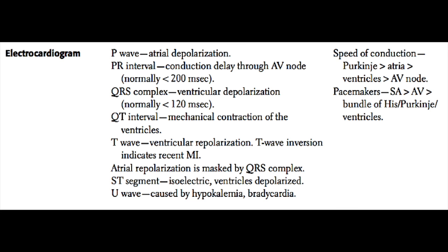A normal PR interval should be between 120 and 200 milliseconds. The QRS complex represents ventricular depolarization, and normally the QRS complex is less than 120 milliseconds.